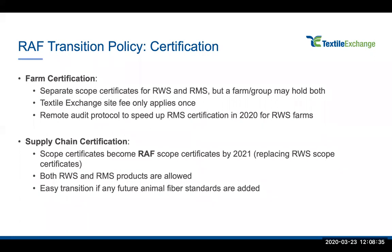Upon the release of Responsible Wool Standard version 2.0 and the Responsible Mohair Standard, we are also introducing a new name: the Responsible Animal Fiber Standard. This helps us combine the standards in the assurance system to make adoption as easy as possible for the supply chain. Key points: at the farm level, there are still separate scope certificates for the Responsible Wool Standard and the Responsible Mohair Standard, however a farm or group may hold both. There is only one Textile Exchange site fee even if both scopes are applied.